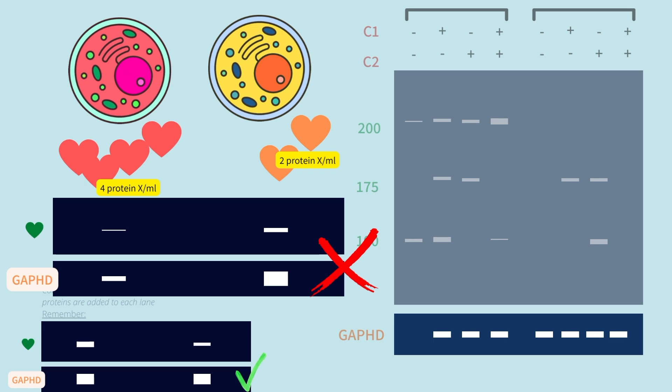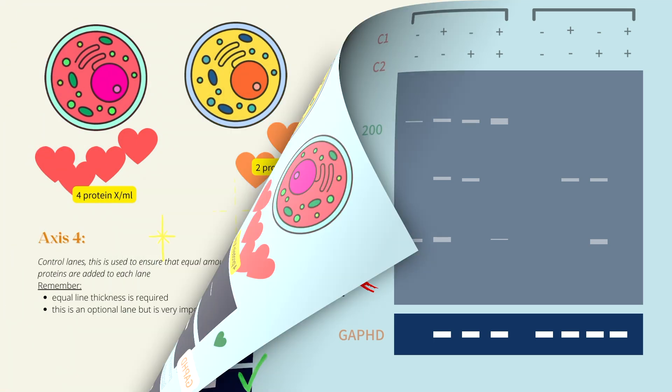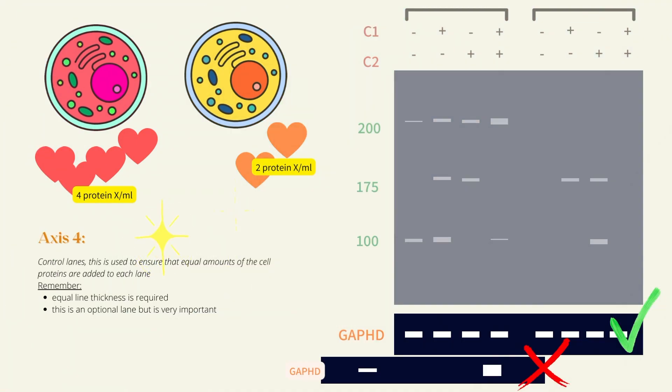When in reality, it's just because the yellow cells had more proteins loaded on the gel. In sum, a good control lane will have equally thick lines. If they're extremely varying in the line thickness, then I would be very skeptical about those results.